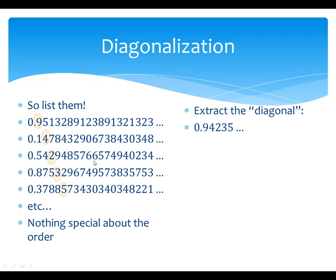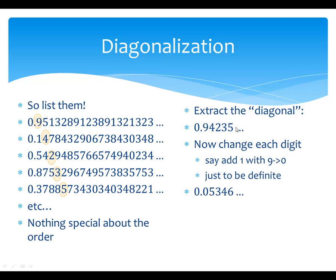There's nothing special about the numbers here — I purposely wrote them down randomly. Here's what we do: we extract what we call the diagonal — the first decimal of the first thing in the list, the second decimal of the second thing in the list, the third decimal of the third thing, and so on. Notice it goes diagonally down. This is why the method is called diagonalization. So that's the number 0.94235, et cetera.